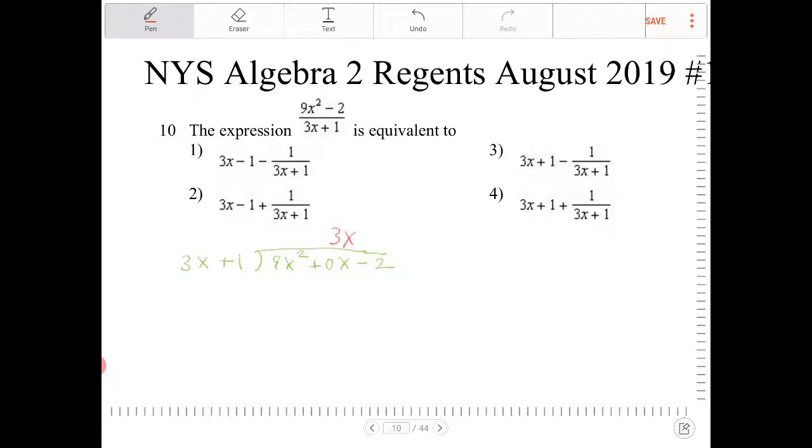So I'm going to place 3x there and multiply 3x plus 1. I get 9x squared plus 3x, and I perform the subtraction. So when I subtract, the 9x squared will cancel. 0x minus 3x—I'm left with negative 3x minus 2.